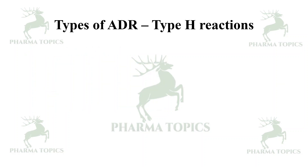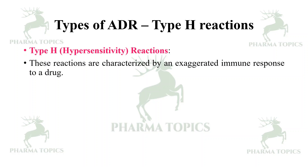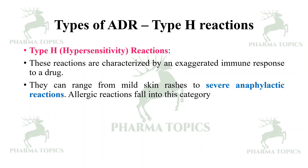Type H reactions are hypersensitivity reactions. These reactions are characterized by an exaggerated immune response to a drug. They can range from mild skin rashes to severe anaphylactic reactions. Allergic reactions fall into the H category — for example, penicillin allergy.